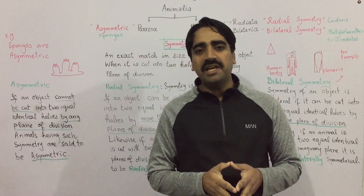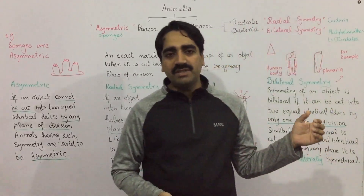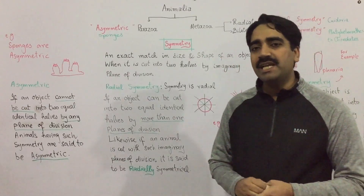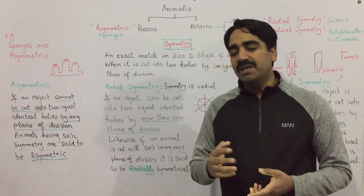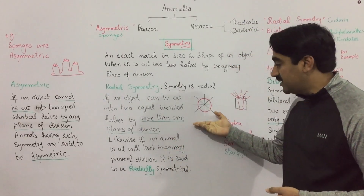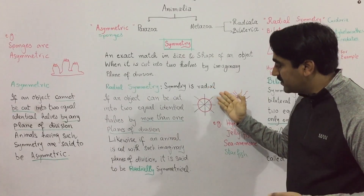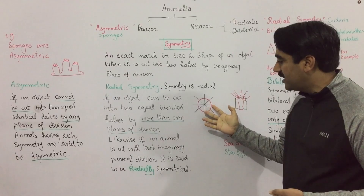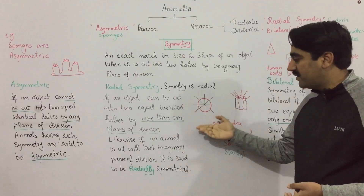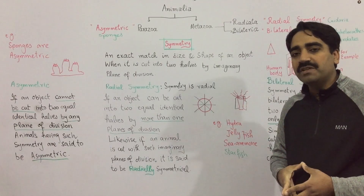Based on this, we can divide animals into two categories: radially symmetrical animals and bilaterally symmetrical animals. In case of radial symmetry, the animal can be cut by more than one plane of division, as you can see — a circle can be cut into two identical halves by more than one plane. Taking an example from animals, hydra can be cut into two equal identical halves by more than one plane of division.